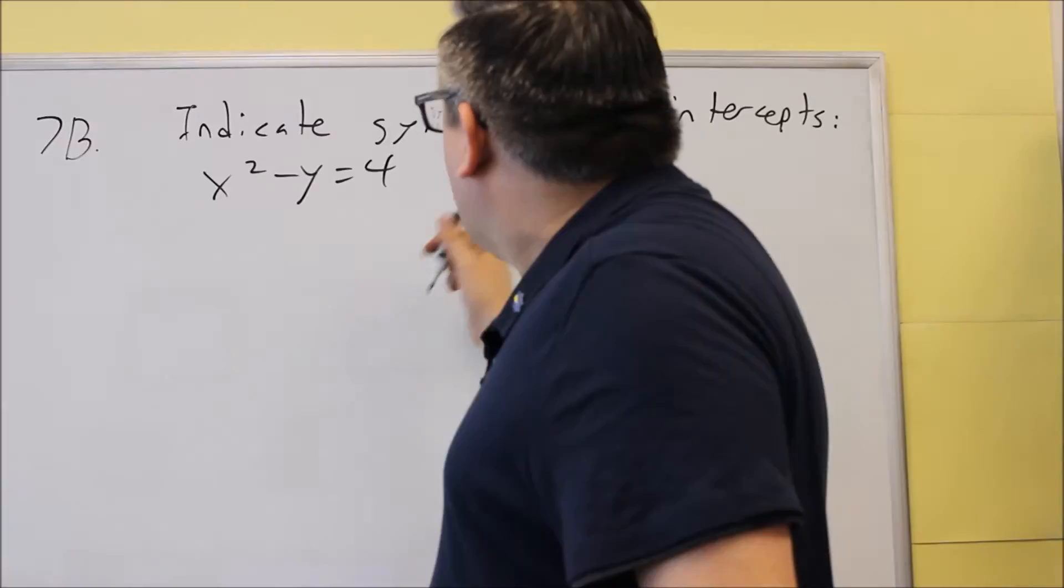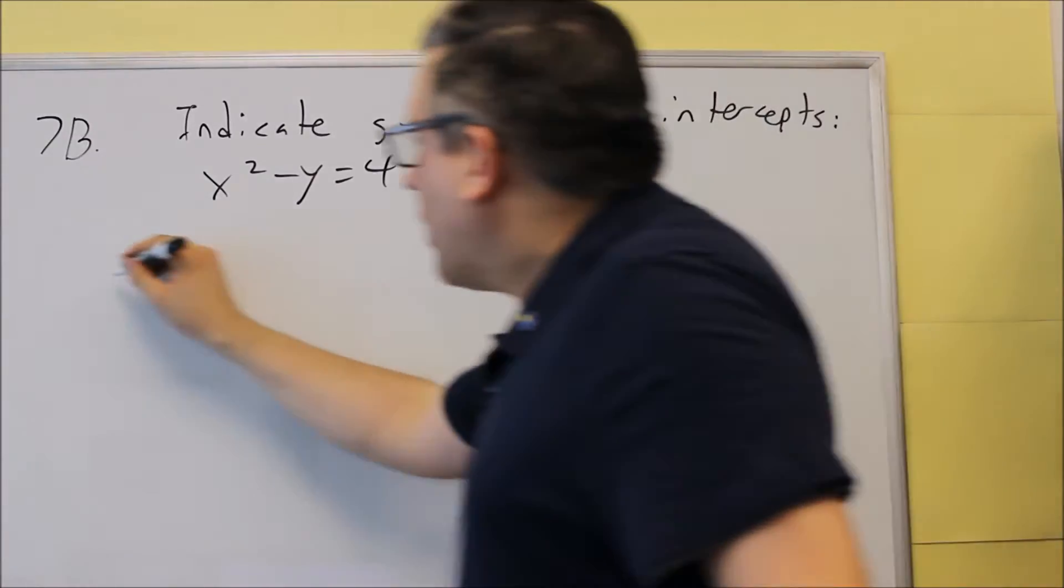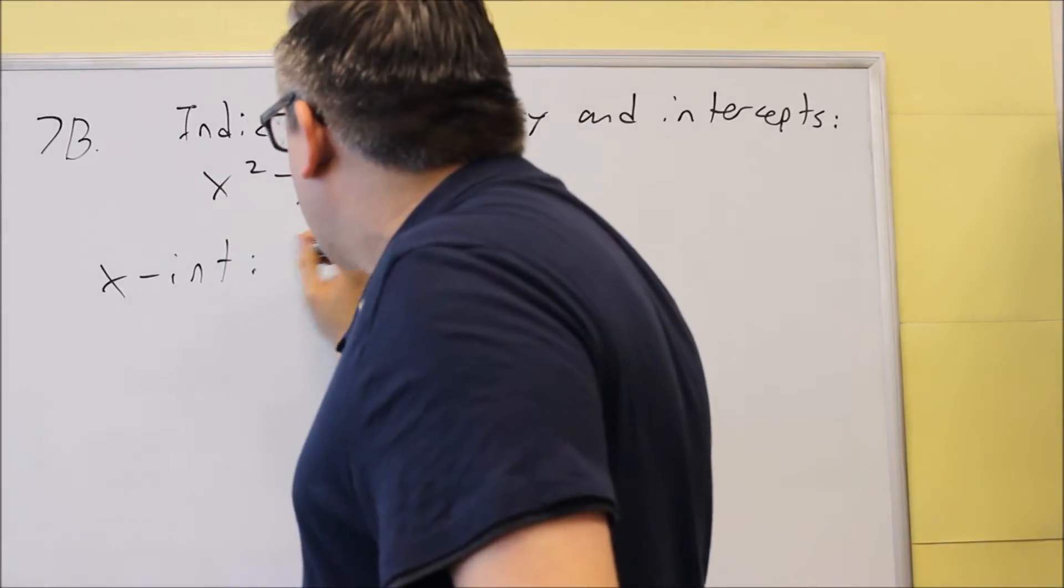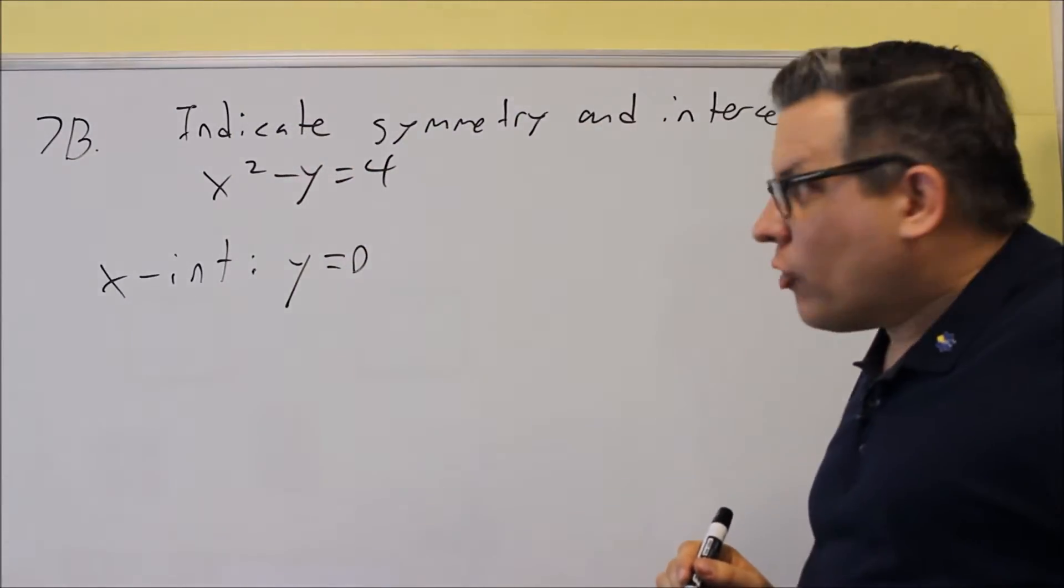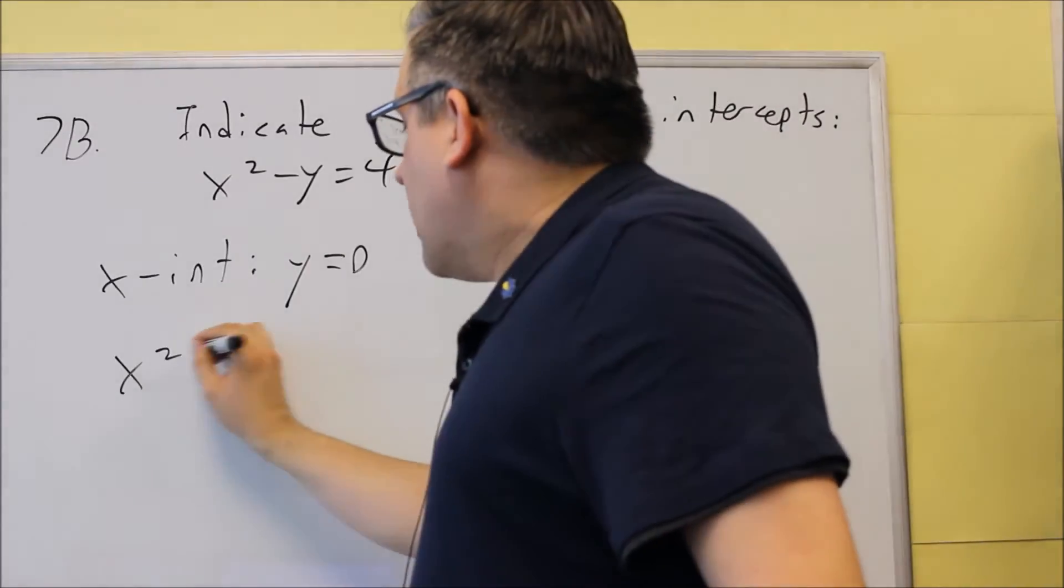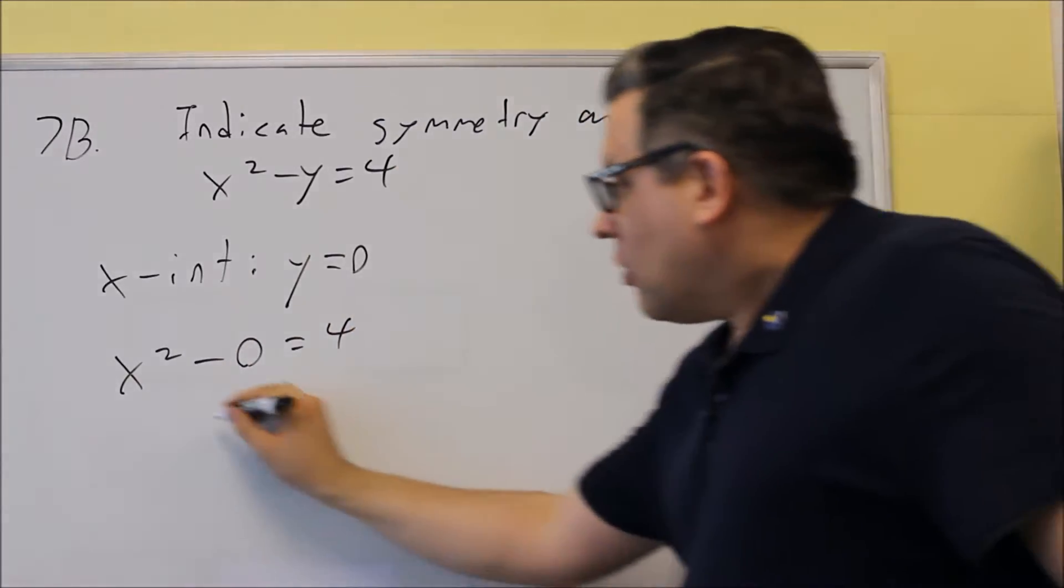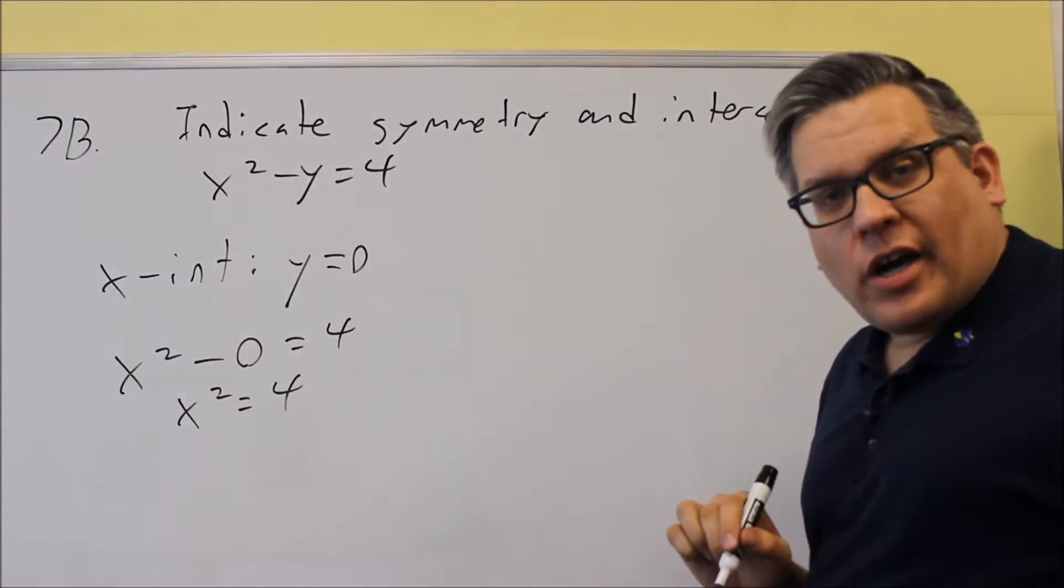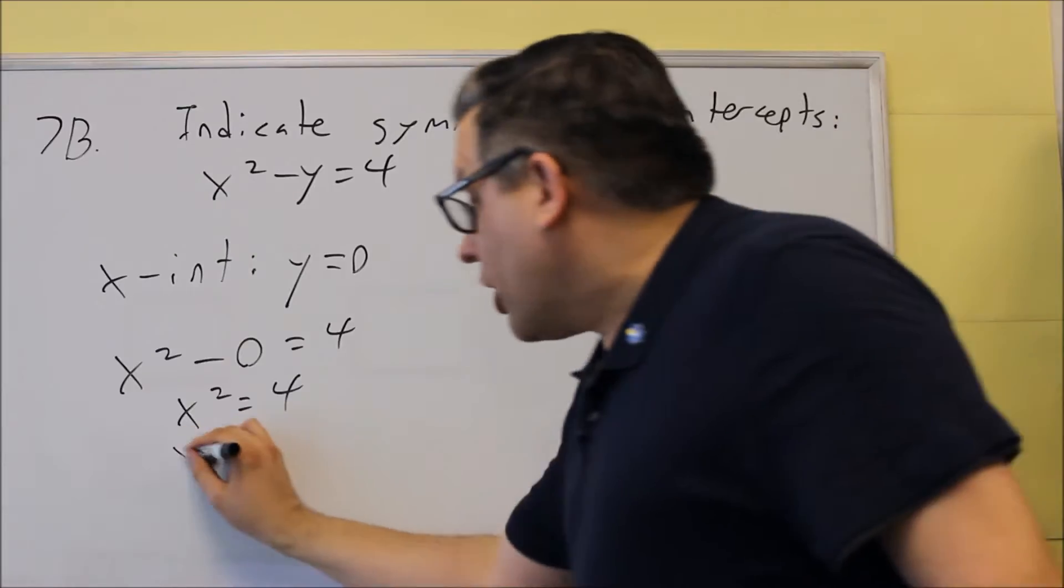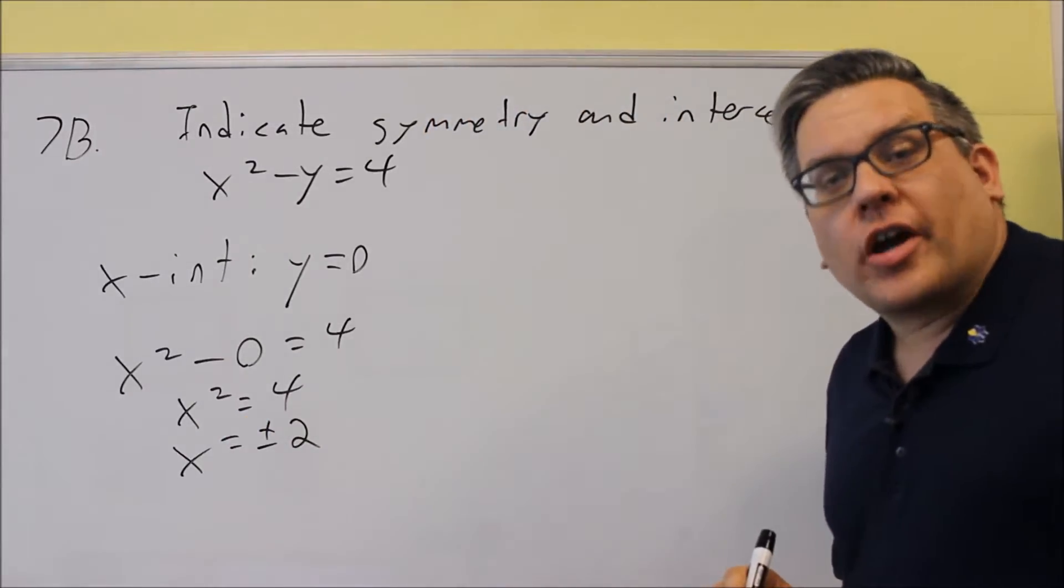So for this, first of all, you're going to want to find the intercepts. We'll do that first. Let's find the x-intercept, and this is where you're going to put in a zero for y. So x² minus zero equals 4. We have x² equals 4, and then you can square root both sides, and we'll get plus or minus 2, and those would be your two x-intercepts.